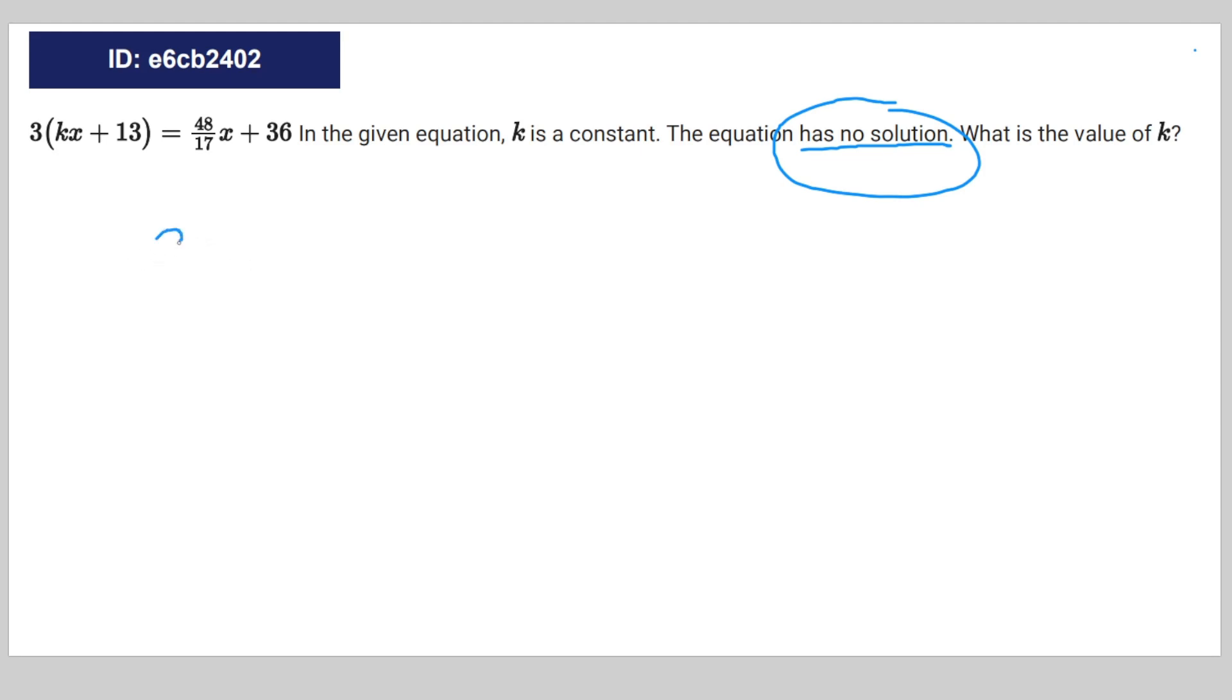Okay, so we're just going to write it out first. 3kx plus 39 is equal to 48 divided by 17x plus 36. So in order for you to get no solution, you're going to want to make the x parts equal to each other—the given variable anyway.